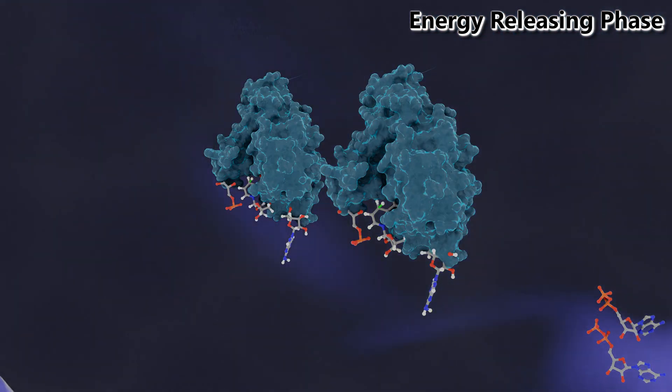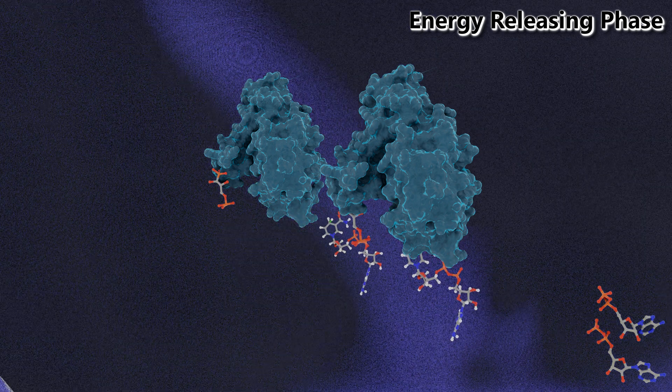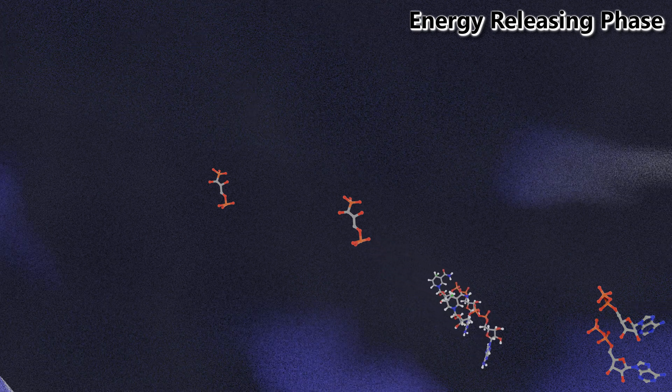During this reaction, an inorganic phosphate from the cytosol is going to attach to each G3P molecule, giving us a total of two phosphates on each molecule.